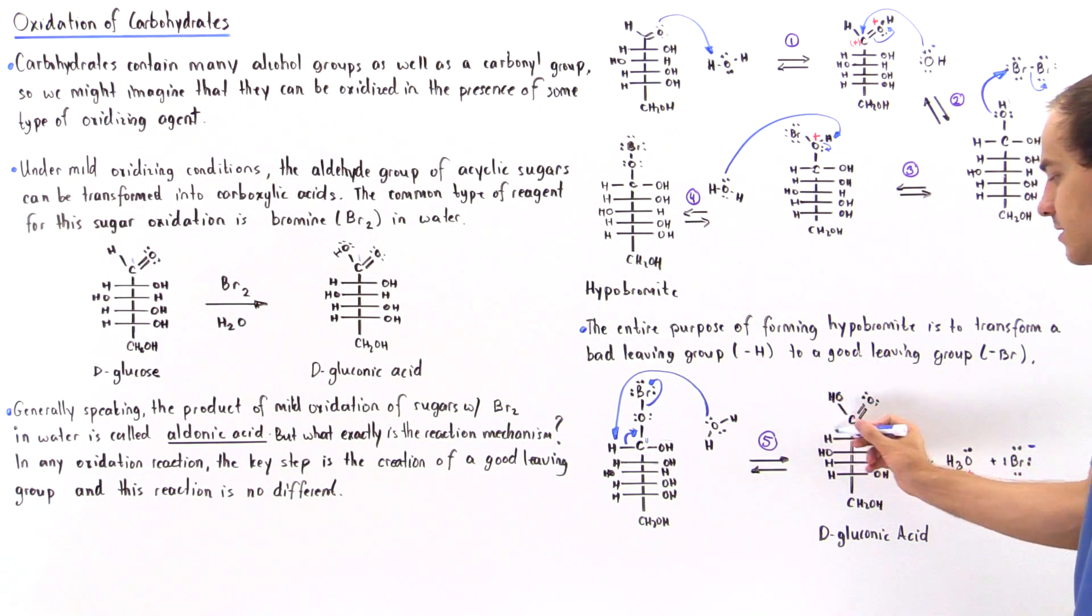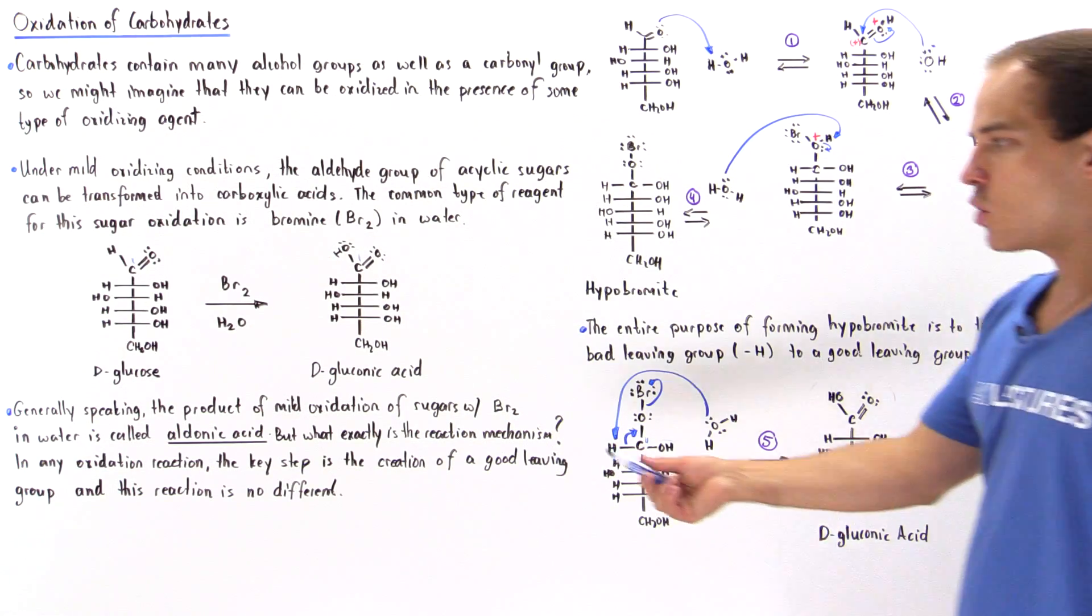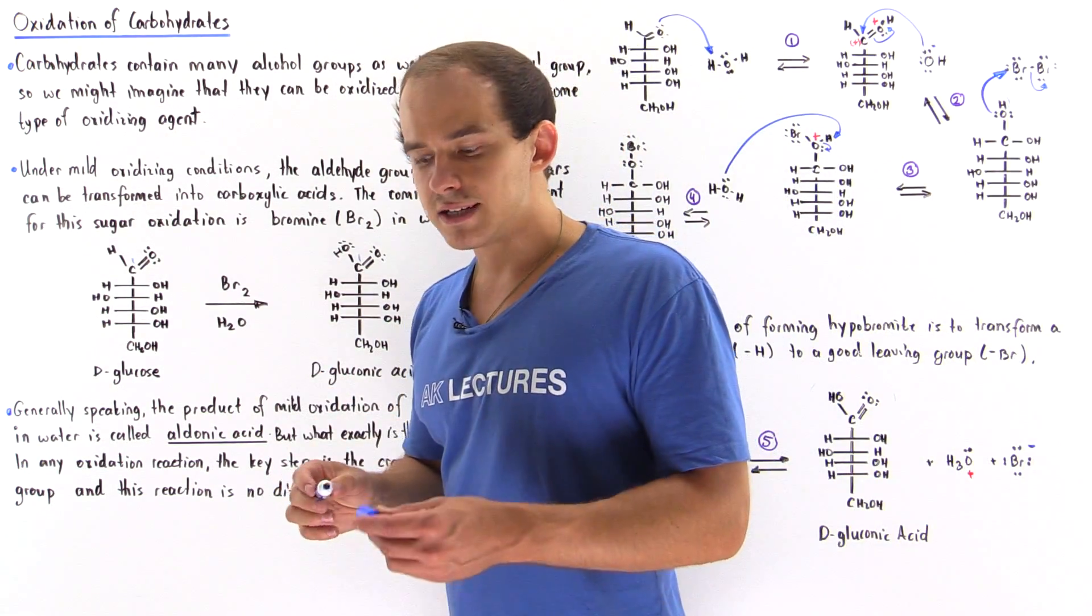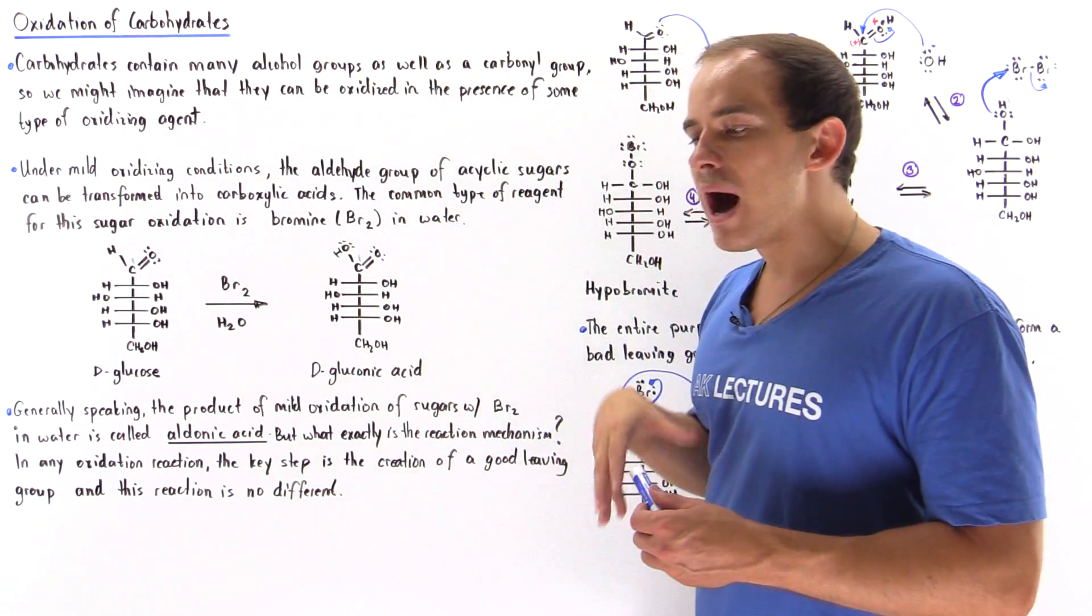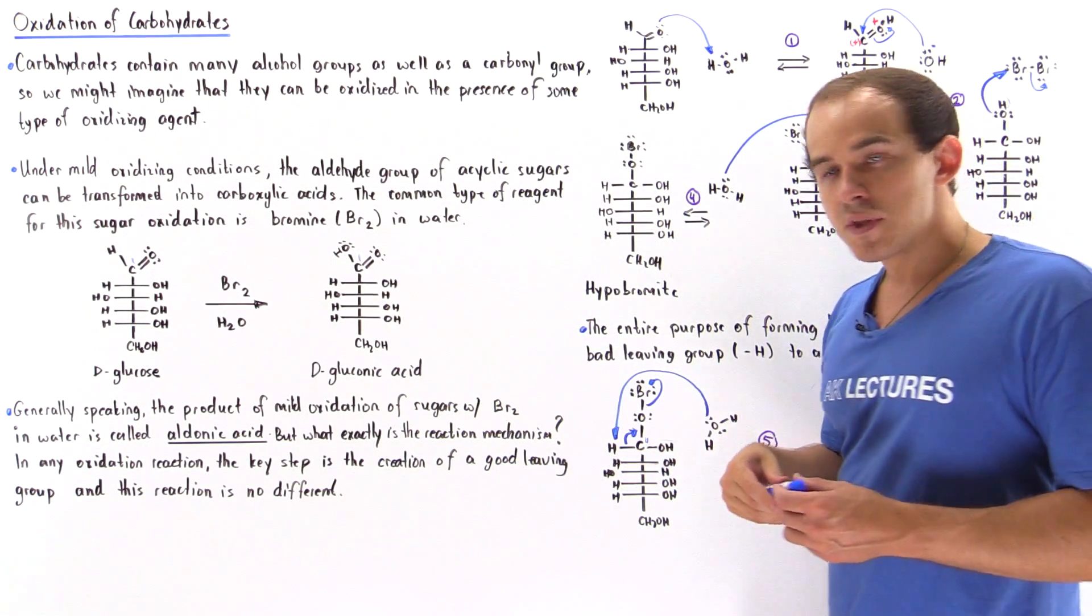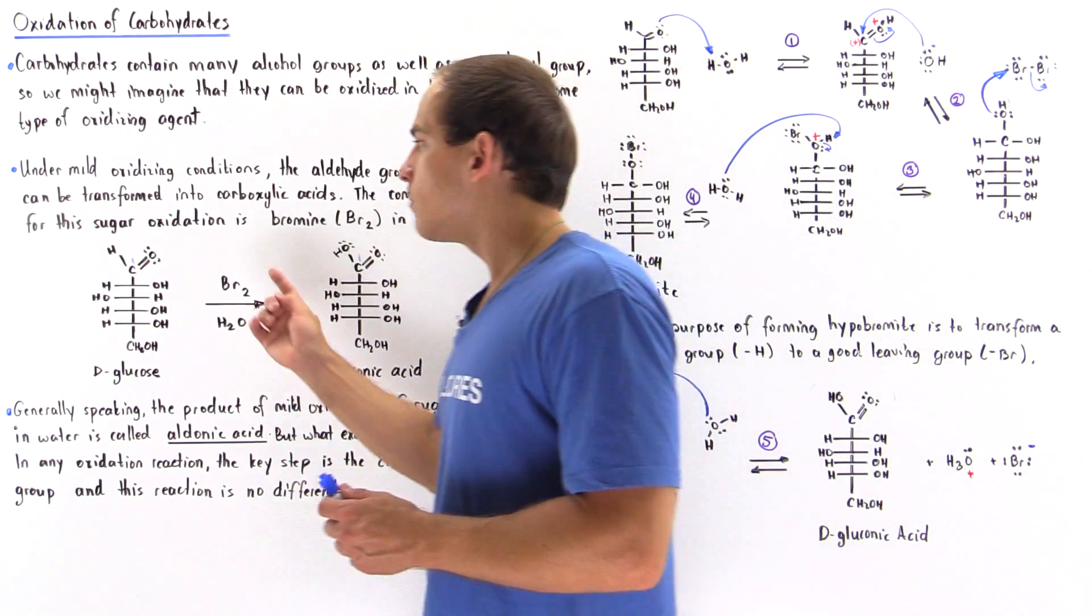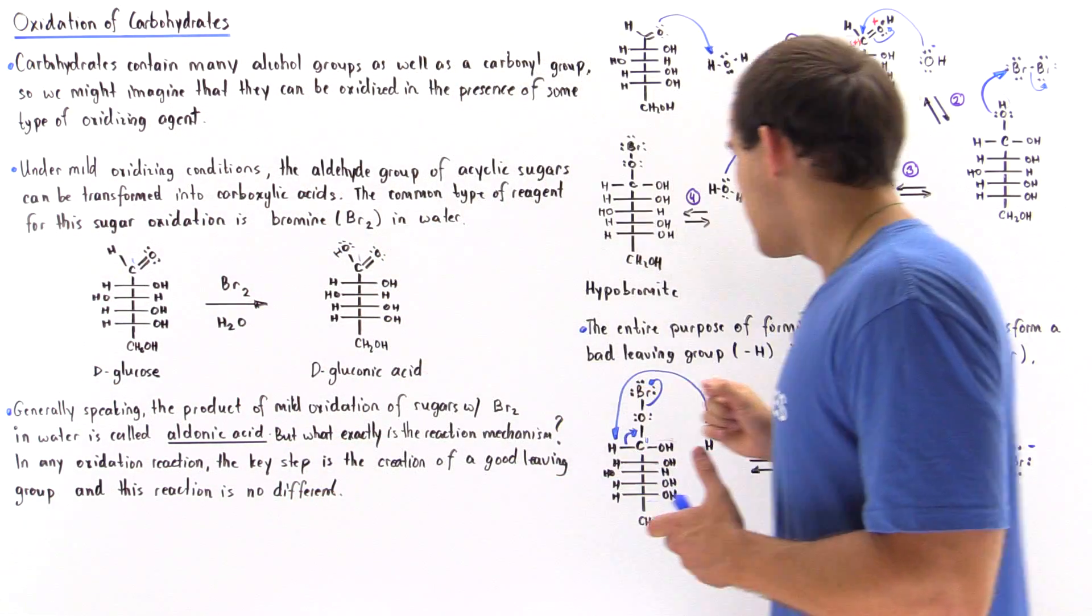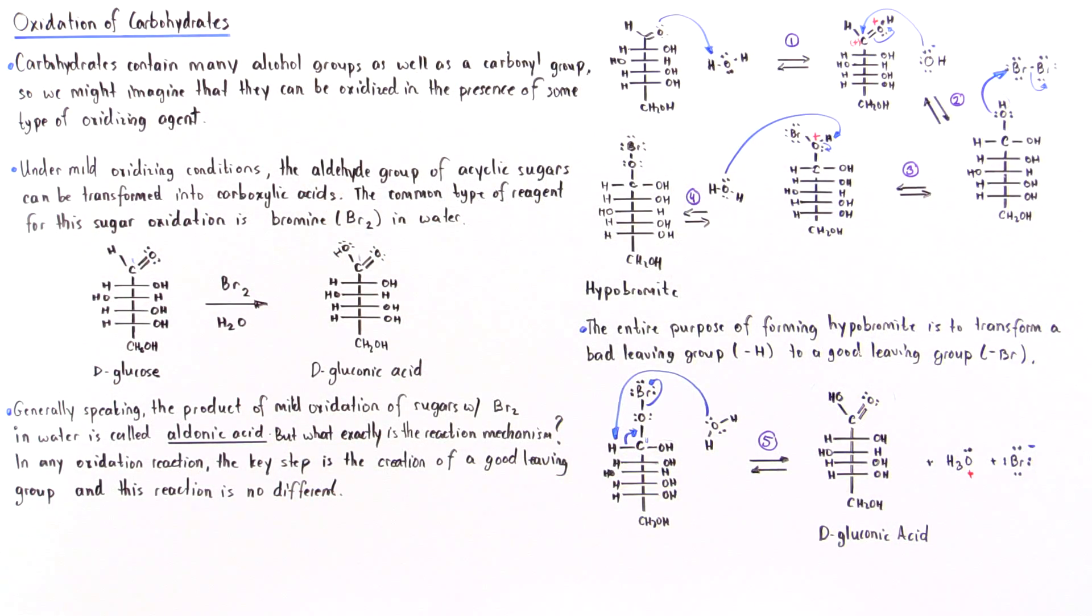So this is basically our carboxylic acid section of our product. And the product is our D-gluconic acid, and more generally known as aldonic acid. So we see that under mild conditions, when we use bromine in water, we basically transform only the aldehyde group into our carboxylic acid.